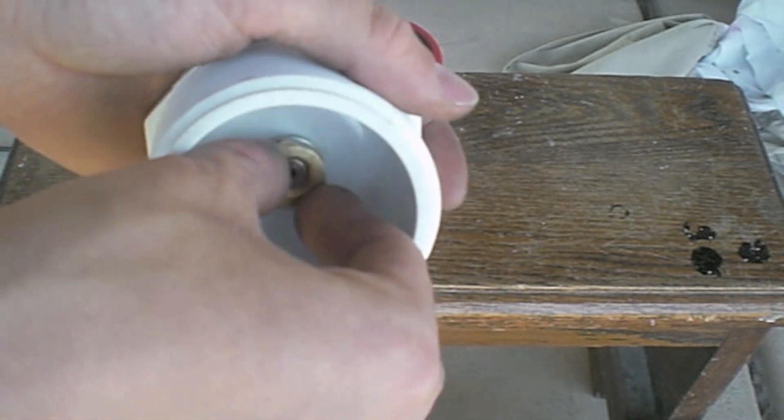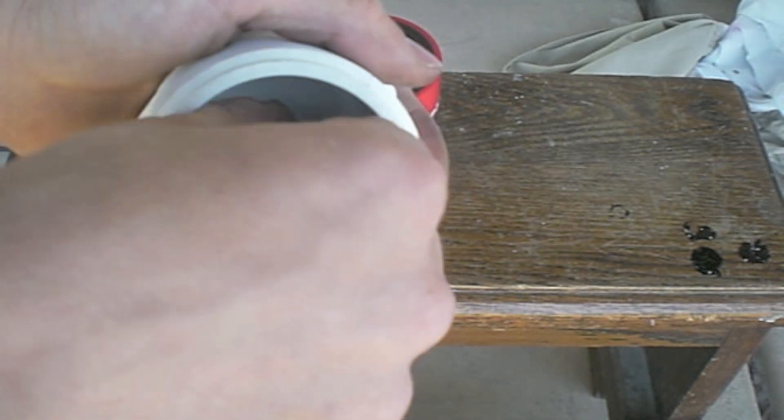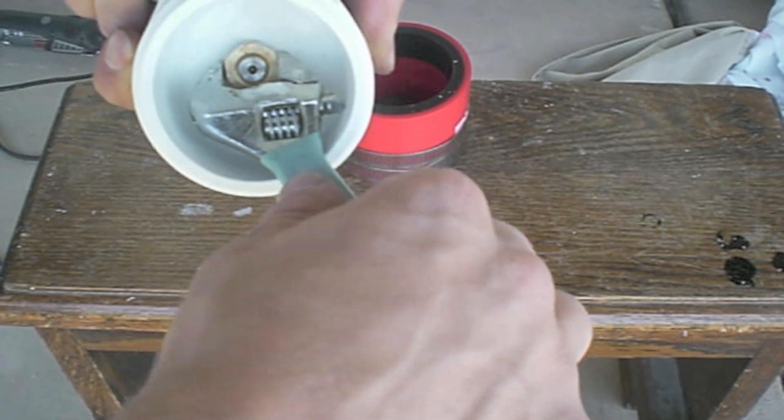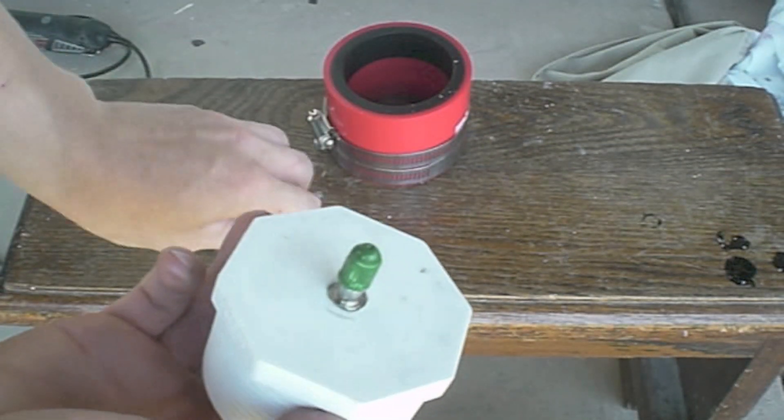Put your locking nut, 1 1/8 inch lock nut on. Now you want to tighten it. Try to crush that gasket. Get a nice tight seal. All right. That's pretty tight.